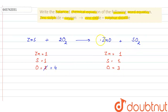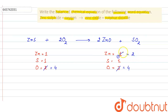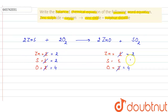But on the product side, we have only 3 oxygen atoms. So we write 2 in front of ZnO. Now oxygen atoms become 2 from ZnO and 2 from SO₂, so total oxygen atoms become 4. But when we write 2 in front of zinc oxide, zinc atoms also increase to 2 on the product side. To equalize zinc, we write 2 in front of ZnS. Zinc atoms become 2, but sulfur atoms also become 2.